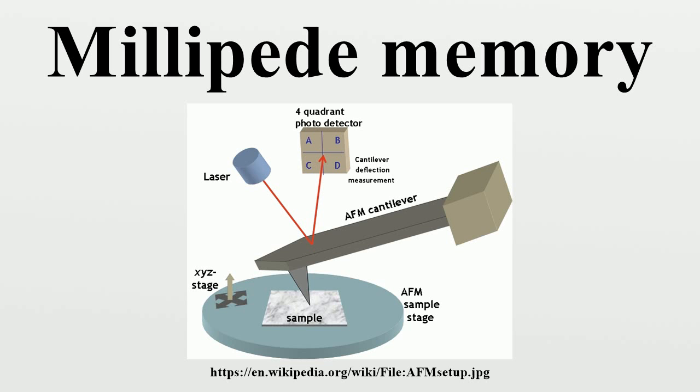In contrast, hard drives store data on a disk covered with magnetic material. Data is represented as local magnetization of this material. Reading and writing are accomplished by a single head which waits for the requested memory location to pass under the head while the disk spins. As a result, the drive's performance is limited by the mechanical speed of the motor.